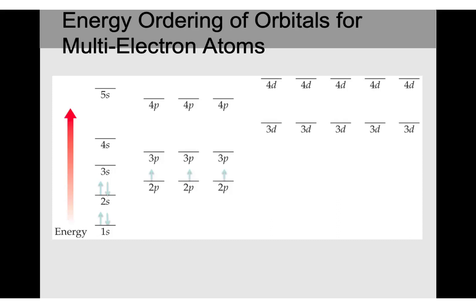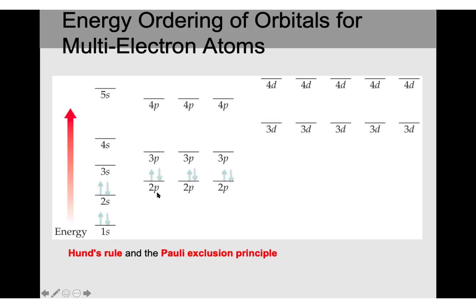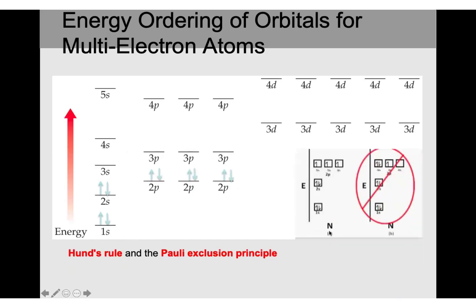For p and d subshells, try to make them half full first before pairing up. First the subshell will be half full, then start to pair up electrons. This is called Hund's rule. In Hund's rule, electrons in the p and d subshells first make the subshell half full before pairing. For example, when drawing the electron configuration of nitrogen, make sure the subshells are half full and not paired up first in each orbital — that would be incorrect.